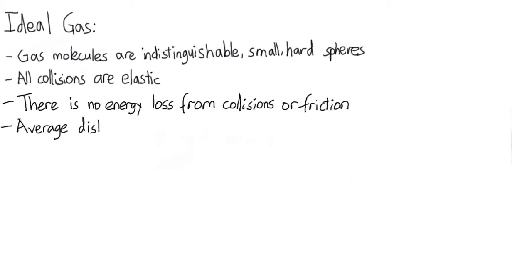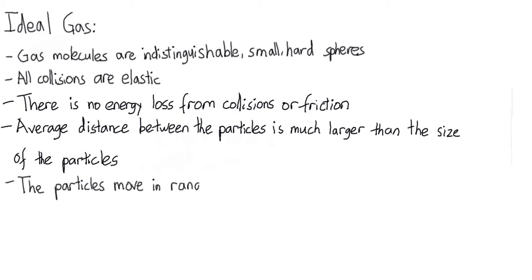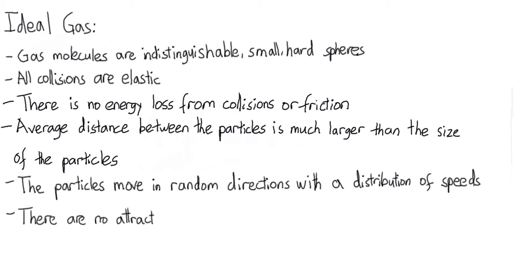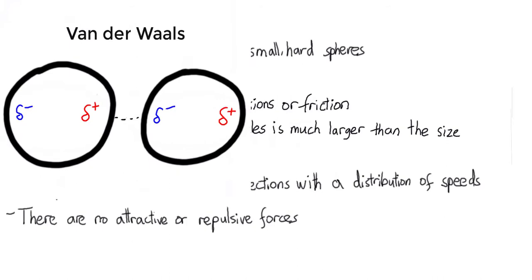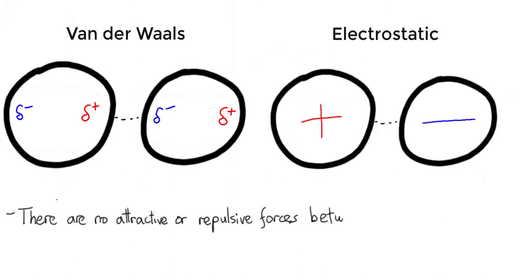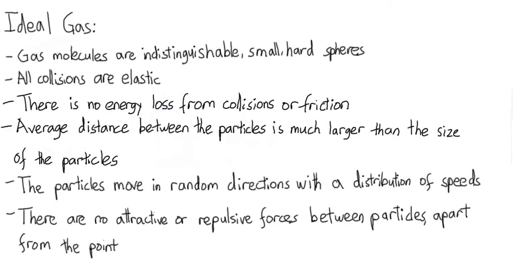Average distance between the particles is much larger than the size of the particles. The particles move in random directions with a distribution of speeds. There are no attractive or repulsive forces such as van der Waals or electrostatic interaction between the particles, apart from the point-like collisions between them.